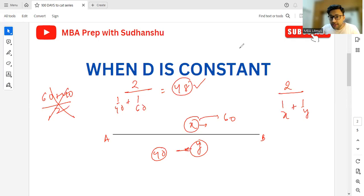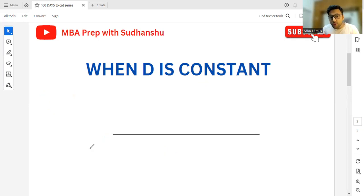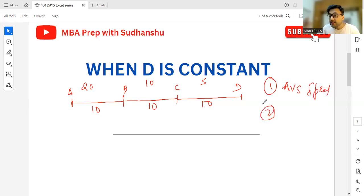Now if that part is clear, can you all tell me in a situation like this what will happen? Let's say somebody goes from A to B, B to C, and C to D. Let's say the distance here is 10 kilometers, 10 kilometers, 10 kilometers, and let's say he goes from A to B at 20 meter per second, from B to C at 10 meter per second, and C to D at 5 meter per second.